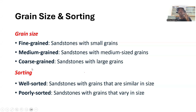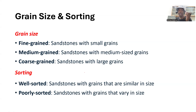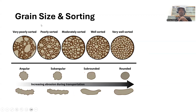A well-sorted sandstone has sand particles of almost the same size. A poorly sorted sandstone contains particles of a wide range of sizes. Fine-grained sandstones are usually seen in aeolian environments, while medium and coarse-grained sandstones are associated with beach and fluvial environments.